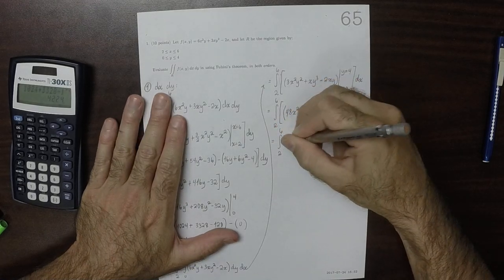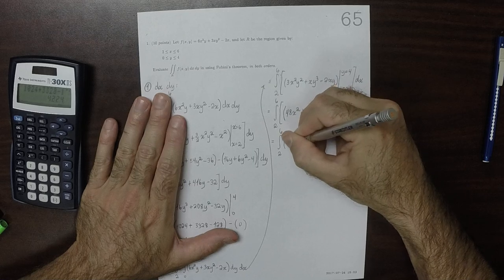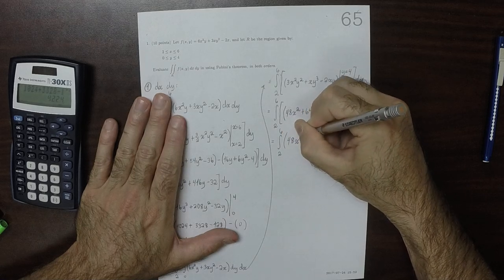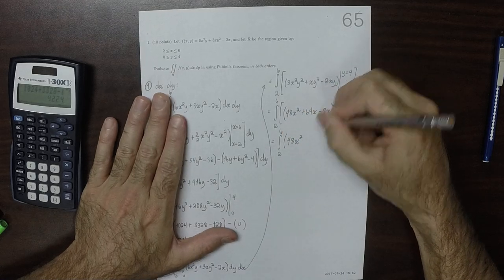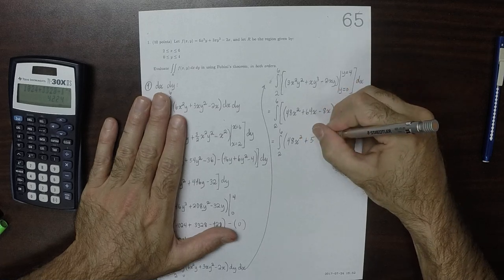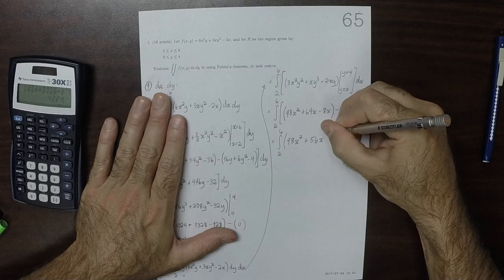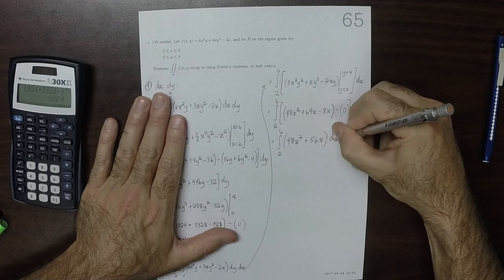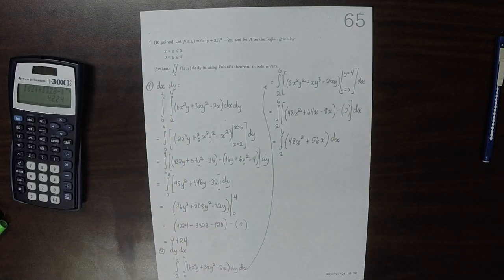Integral 2 to 6, and simplifying a little bit, that would be 48x squared plus 56x dx. Now we're finished with all the y's.